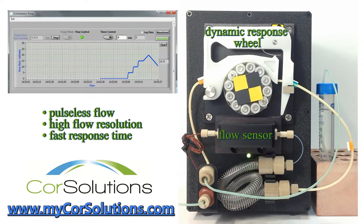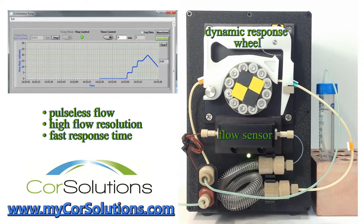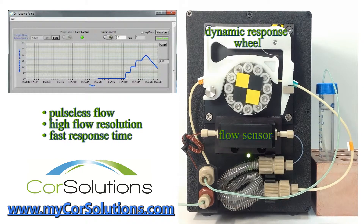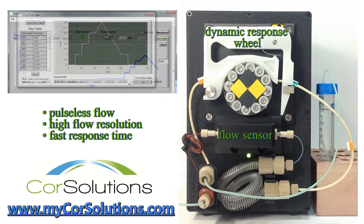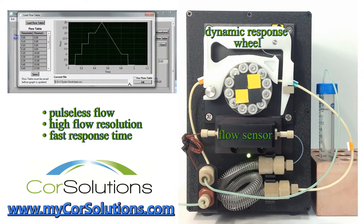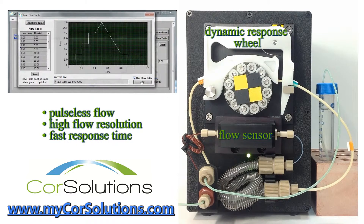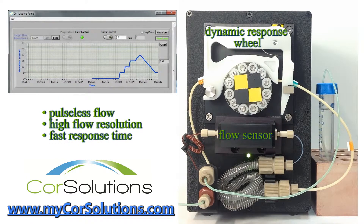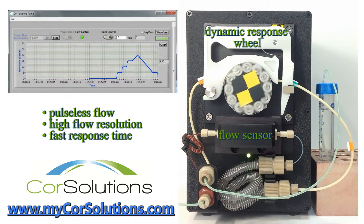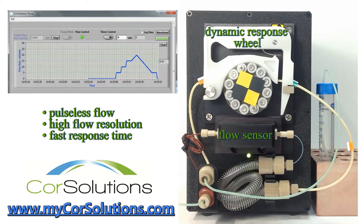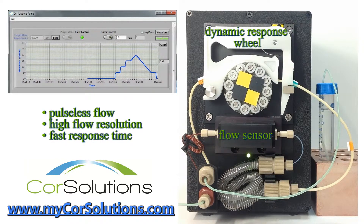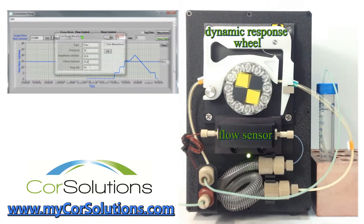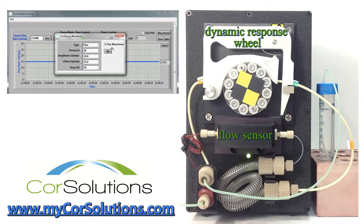Operation of the PeriWave is as easy as entering flow rates and times into the flow table window to generate the desired flow profile. The PeriWave can pump in both directions and is also capable of implementing several common flow functions, which are available in the waveform window.